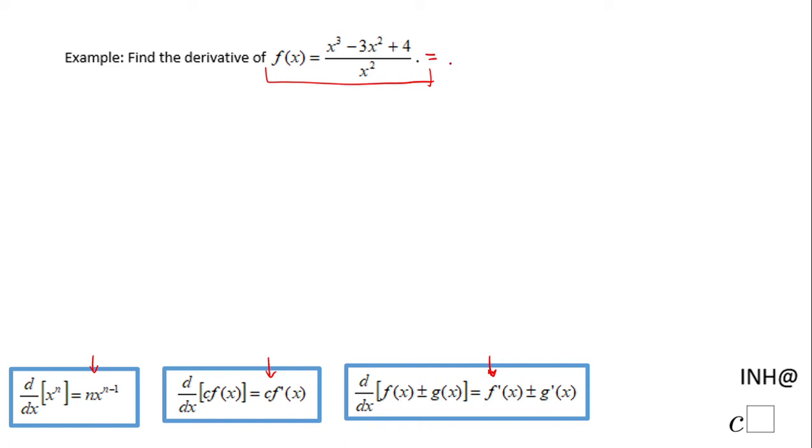is simplify this expression by dividing each term by x². We have x³ divided by x², which is just x, minus 3x² divided by x², which is 3, and the last term is 4 over x².